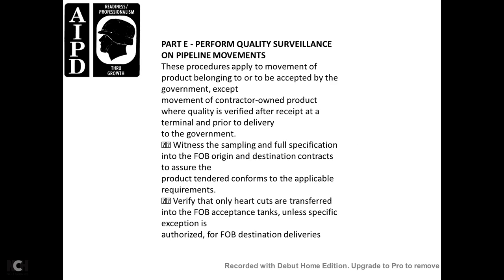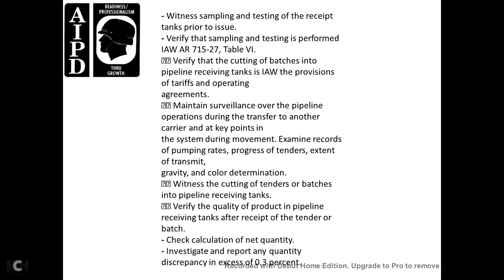Part E: Performing Quality Surveillance of Pipeline Movement. This procedure applies to the movement of products belonging to the government, except for movements by contractor-owned and operated systems where quality is verified after receipt at the terminal. For FOB origin designations, witness and sample the full specification at the FOB point to ensure the product conforms to applicable requirements. Verify only products that have passed quality checks are transferred into FOB-accepted tanks unless specification exemptions are authorized.